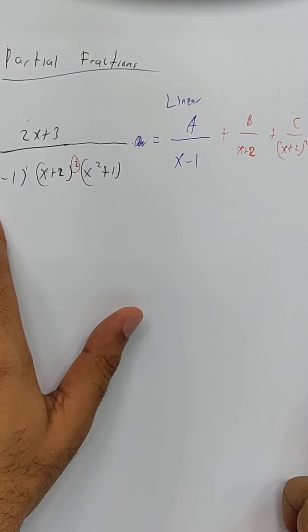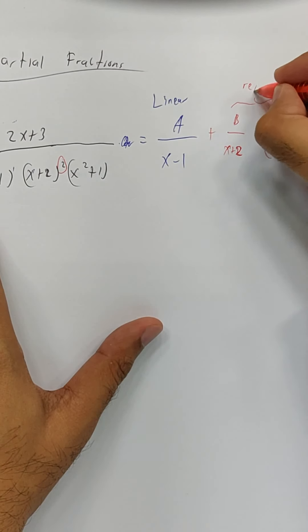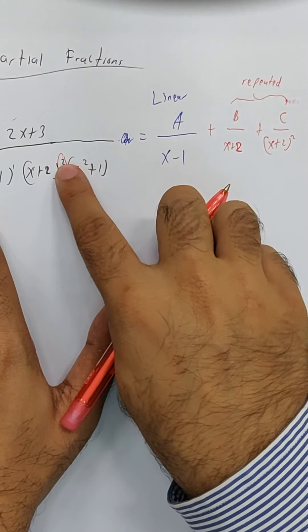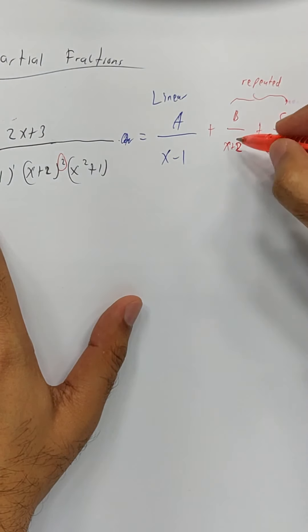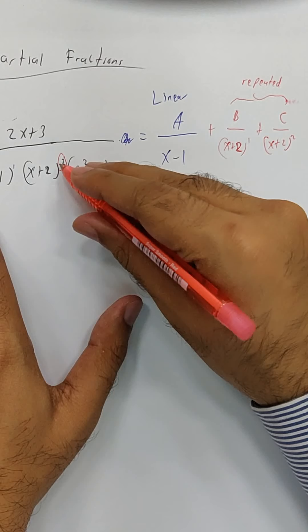There are many, many words for this, but normally we just say it's a repeated. Okay, you see squared here? First, you write down to the power 1, and then you go to power 2, to the maximum power what we have there.